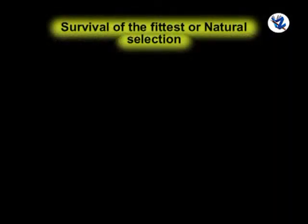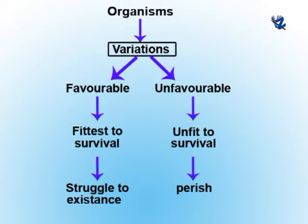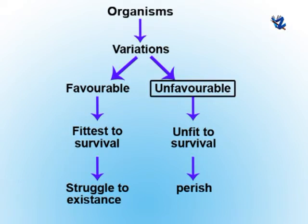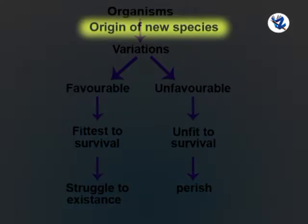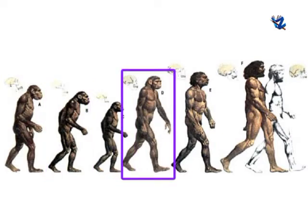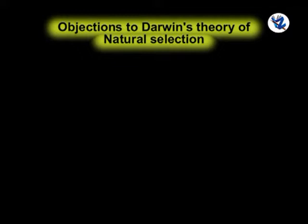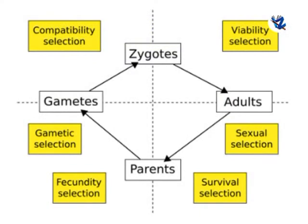Survival of the fittest or natural selection: Organisms with favorable variations succeed in the struggle for existence, while organisms with unfavorable variations are unfit to survive and perish. Origin of new species: As a result of struggle for existence, variability and inheritance, organisms tend to become better adapted to their environment, with slight betterment of character in each generation. The main drawback of Darwinism is that this theory has no satisfactory explanation for the cause, origin and inheritance of variation.